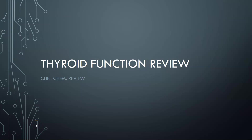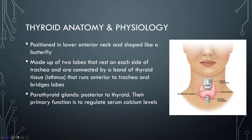Hi, this is Dr. A with a ClinChem review on thyroid function. Let's go over the anatomy and physiology. The thyroid is positioned in the lower anterior neck and shaped like a butterfly, with two lobes that rest on each side of the trachea. They're connected by a band of thyroid tissue called the isthmus, which runs anterior to the trachea. The parathyroid glands are four glands posterior to the thyroid, and their primary function is calcium regulation.